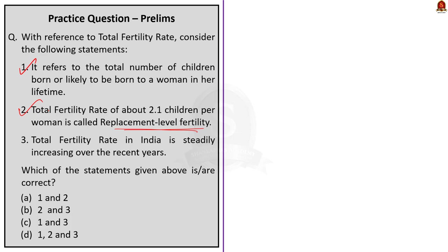Statement three says total fertility rate in India is steadily increasing over the recent years. As per the National Family Health Survey 5, we can see that total fertility rate in India is steadily decreasing over a period of time, so this statement is incorrect. The question asks for correct statements, so the correct answer for this question is option A, that is statements 1 and 2.